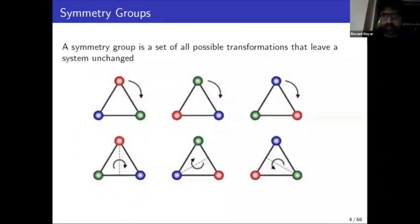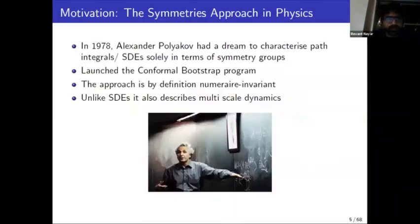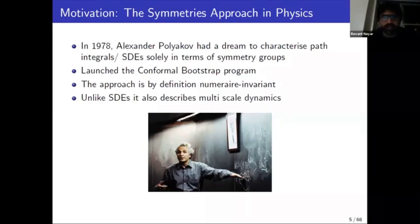A symmetry group is a set of all possible transformations that leave a system unchanged — in this case, different kinds of rotations and reflections. Symmetry groups have been known for a long time, but it was only in 1978 that Sasha Polyakov had the idea to characterize the dynamics of systems described by path integrals or SDEs solely in terms of symmetry groups, launching the so-called conformal bootstrap program.